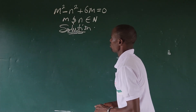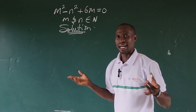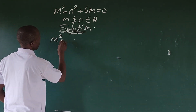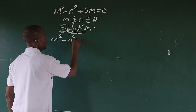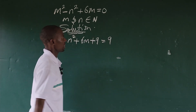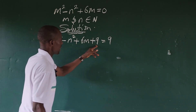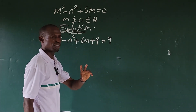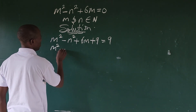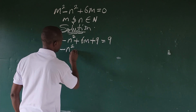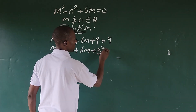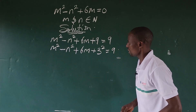The first thing we're going to do is add n² to both sides of the equation. This gives us m² minus n² plus 6m plus n² equal to n². We can rewrite this as m² plus 6m plus 3 to the power of 2, which gives us m² plus 6m plus 3² equal to n² plus 9.